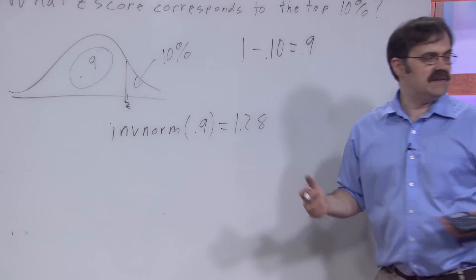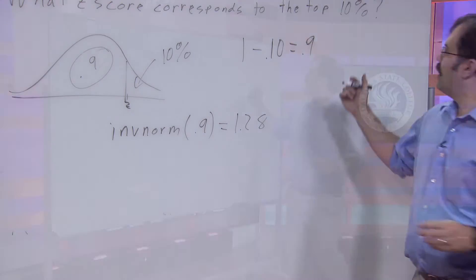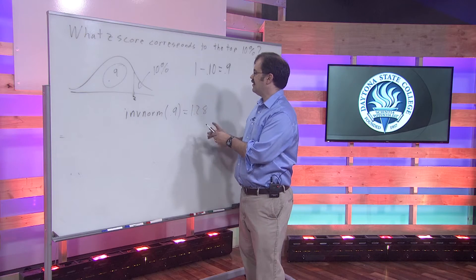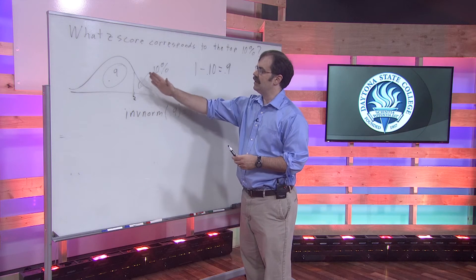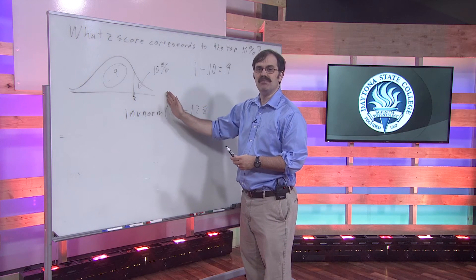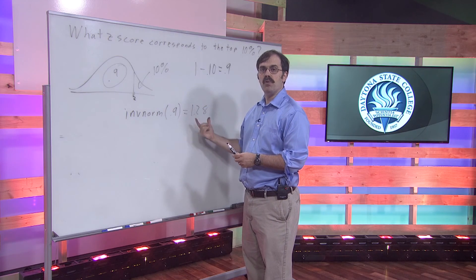So the z-score that would be the cutoff for the top 10%, that corresponds to a z-score where there is 10% above it, would be 1.28.